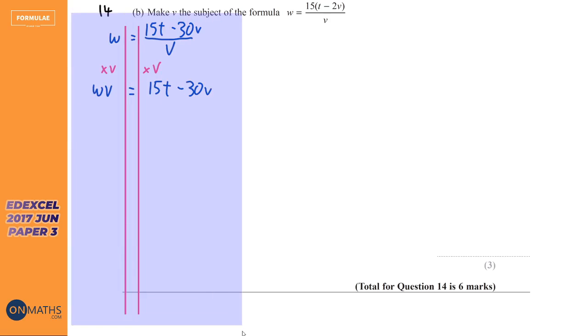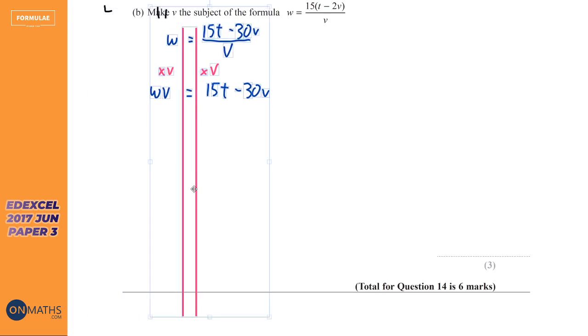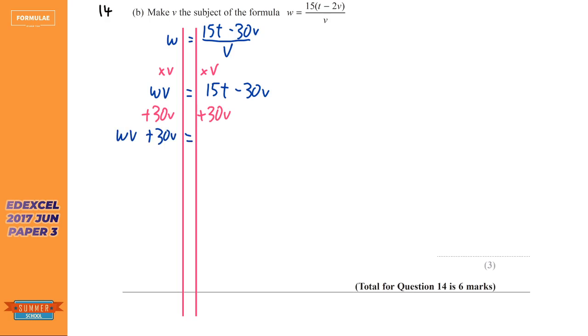Now you can see here, I've put this way too far to the left. So I'm just going to move this over. I think I've moved my question number as well. So let's leave that there. So next thing I want to get the Vs on the same side. Here we've got a V term and here we've got a V term. So we want them on the same side. So I'm just going to go plus 30V on both sides. So we've got WV plus 30V equals 15T.